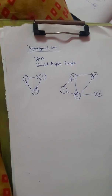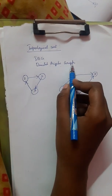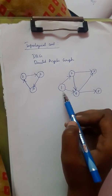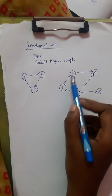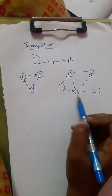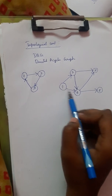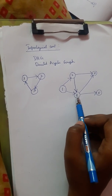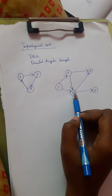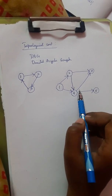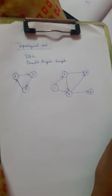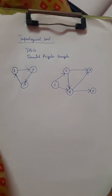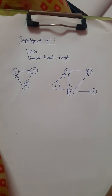We need to follow a directed acyclic graph. For example, in this graph: 1, 2, 4 — there is no direction from 4 back to 1, only 1 to 4. So this is a directed acyclic graph, and this is the type of graph we use for topological sorting.